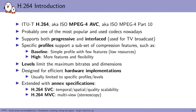H.264 has lots of compression features, some of which can be complex to implement. There are different profiles that each enable a subset of features. The baseline profile is quite simple and a good fit for easy implementations, while high profile requires more logic and has more features for encoding efficiently. There's also a concept of levels to set maximum bitrates and dimensions. There are annex specifications as well — SVC for scalability, allowing extra temporal, spatial, or quality data you can optionally decode, and MVC for multiple views, mostly used for stereoscopy or 3D.